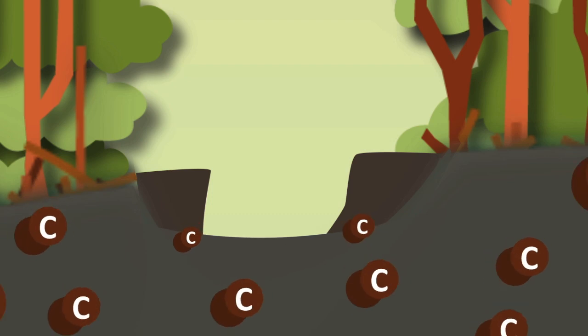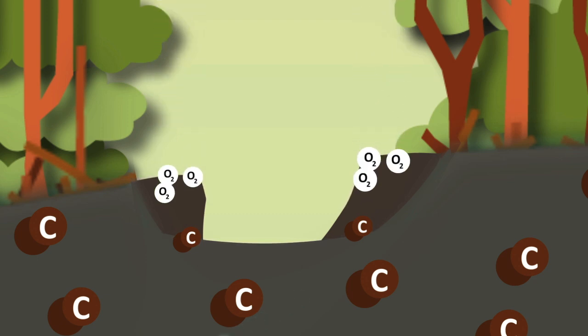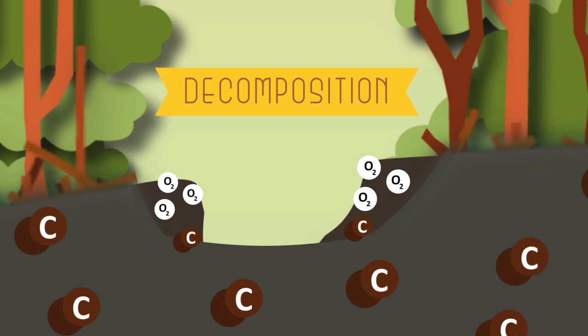The organic carbon matter near the ditch is drying out. Oxygen enters the peat, and the peat begins to decompose.